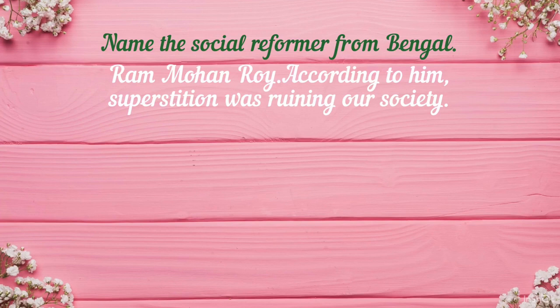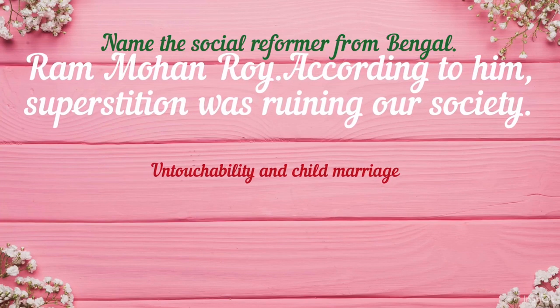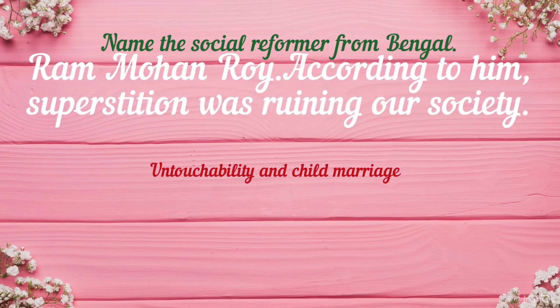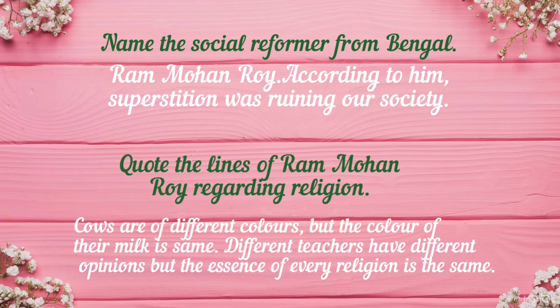According to Ram Mohan Roy, a social reformer from Bengal, these social evils and superstitions were ruining our society. He believed in practical and scientific knowledge. He wanted to create awareness among Indians regarding the real intentions of the British, and therefore he started publishing newspapers, but the suspicious British stopped his newspaper soon.